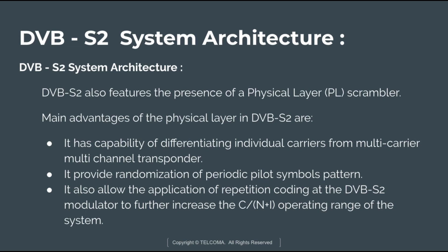DVB-S2 also features a physical layer scrambler. The main advantages of the physical layer in DVB-S2 are: it has the capability of differentiating individual carriers from a multi-carrier, multi-channel transponder; it provides randomization of periodic pilot symbol patterns; and it allows the application of repetition coding at the DVB-S2 modulator to further increase the C/(N+I) operating range of the system.